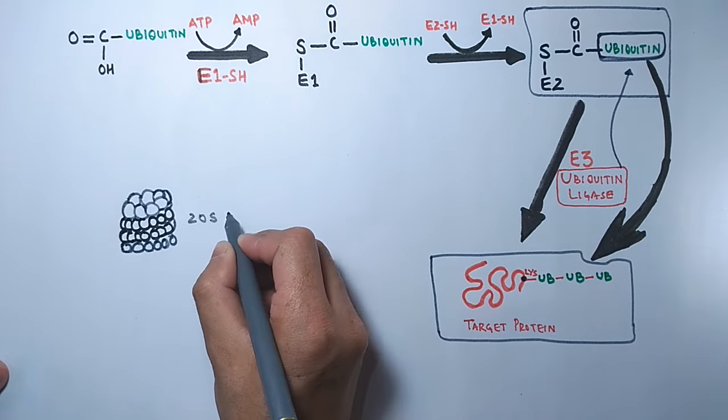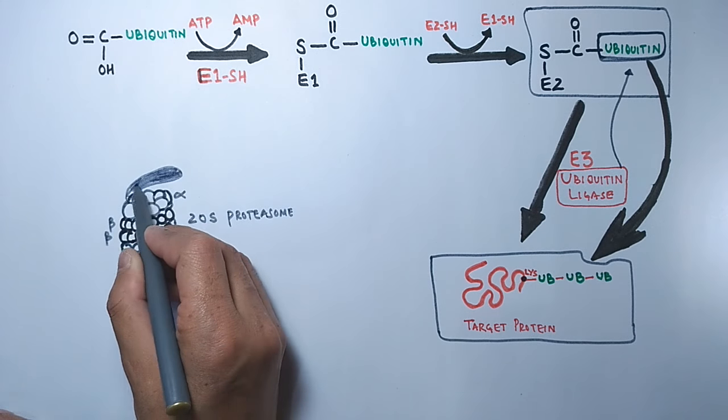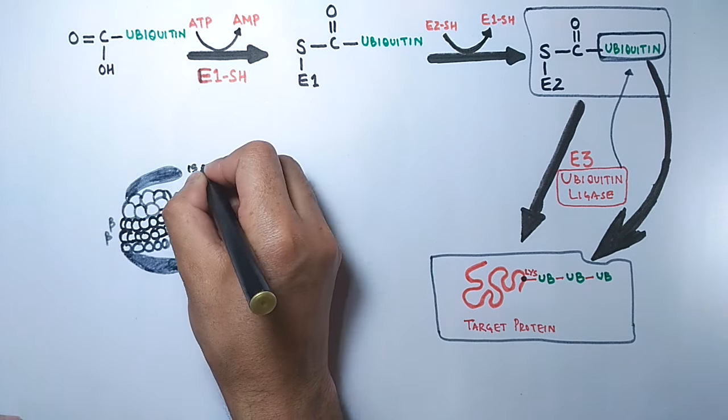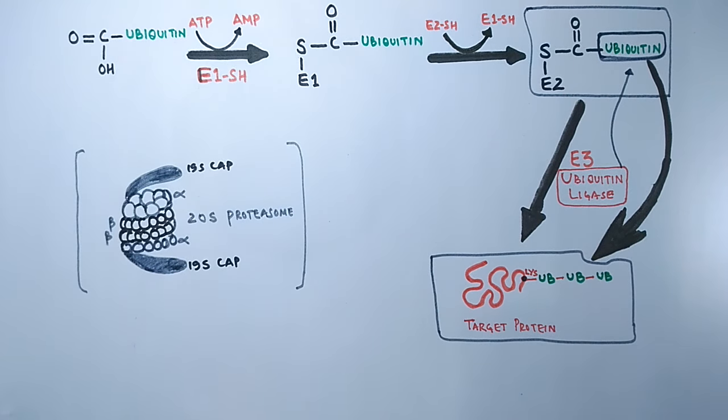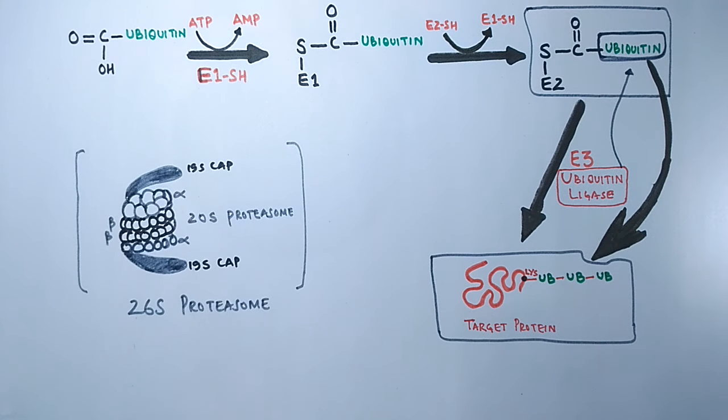This makes the 20S proteosome. To this 20S proteosome, the 19S cap is attached to either one or both alpha subunit rings. This completes the structure, thus forming the 26S proteosome which is fully functional to degrade the proteins into peptides.